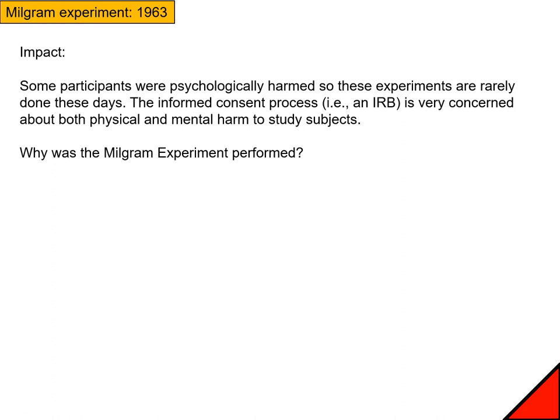Some of the participants were psychologically harmed. Even after being told afterwards that they hadn't actually shocked anyone, they still felt traumatized because they believed they had electrocuted someone to death because they were told to. That's part of why the informed consent process is very concerned about both physical and mental harm to study subjects — it's not just about physical procedures like blood draws; it's also about whether the person will undergo psychological harm from participating in the experiment.